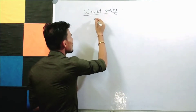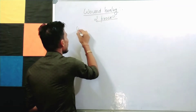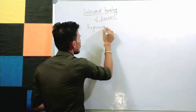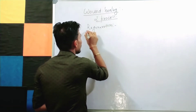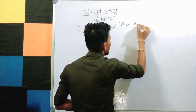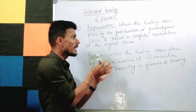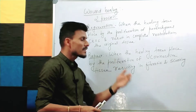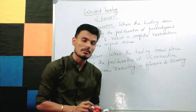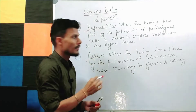Wound healing involves two processes. Number one is regeneration, and number two is repair. The wound healing process — in which the body cells respond to cell injury to restore normal structure and function of the damaged cell — takes place by these two processes.